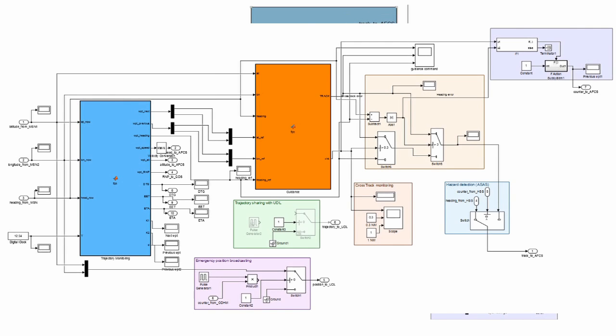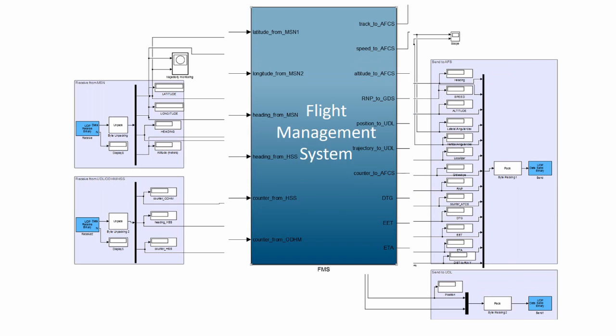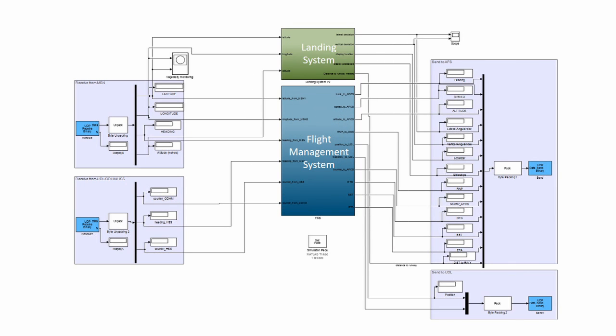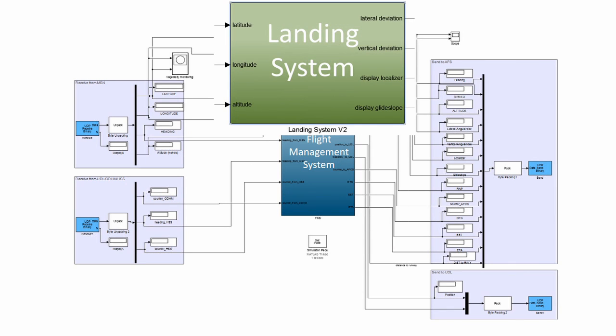During the final approach, the landing system takes over the flight management system and sends the lateral and vertical angular deviations to the flight control system to follow the landing trajectory.